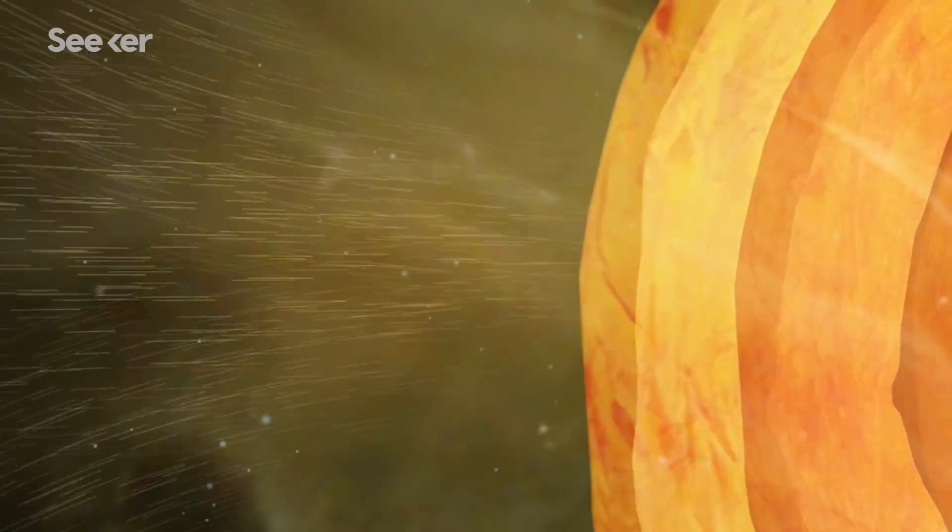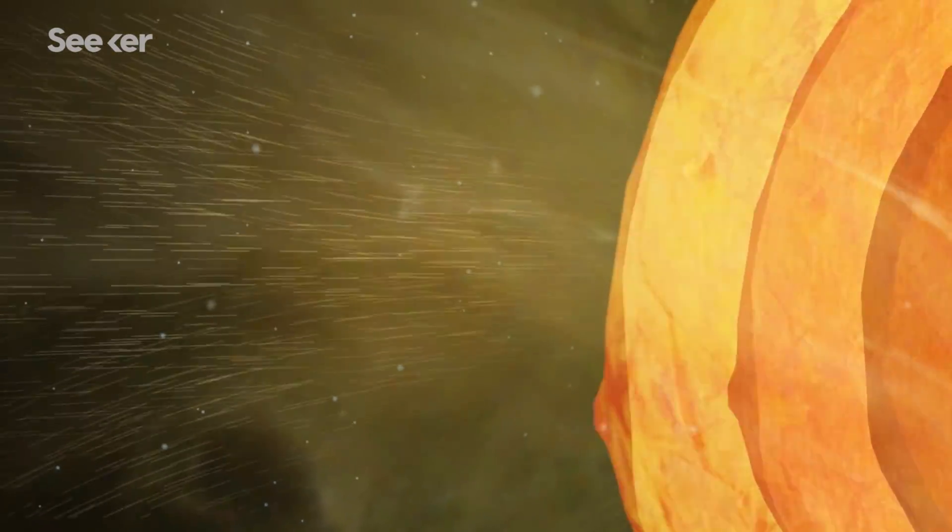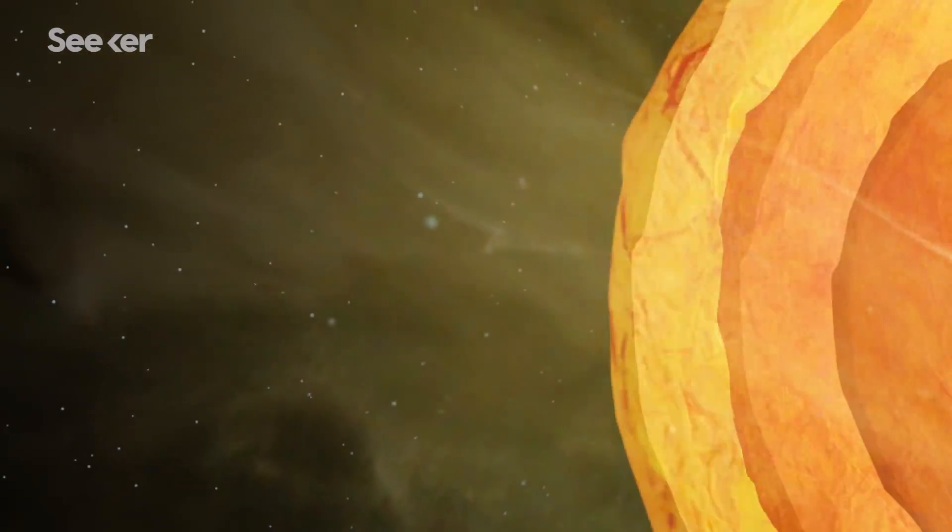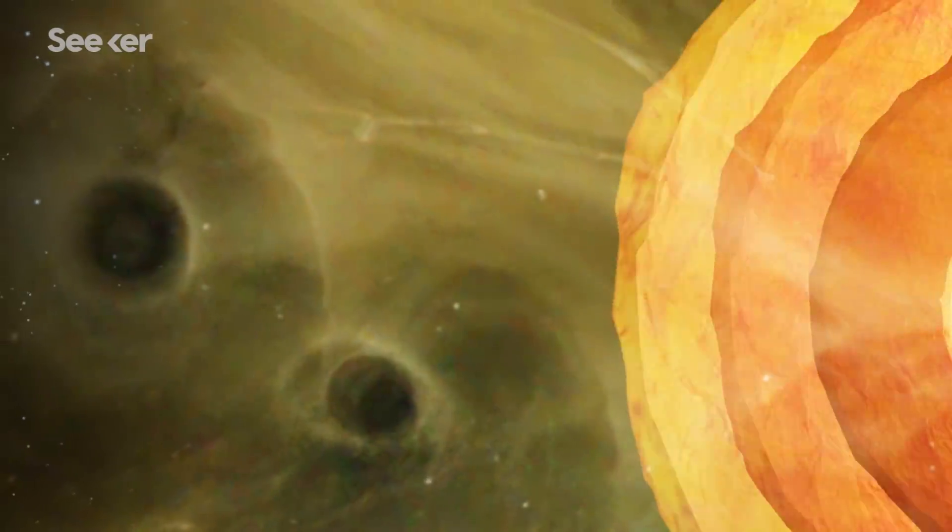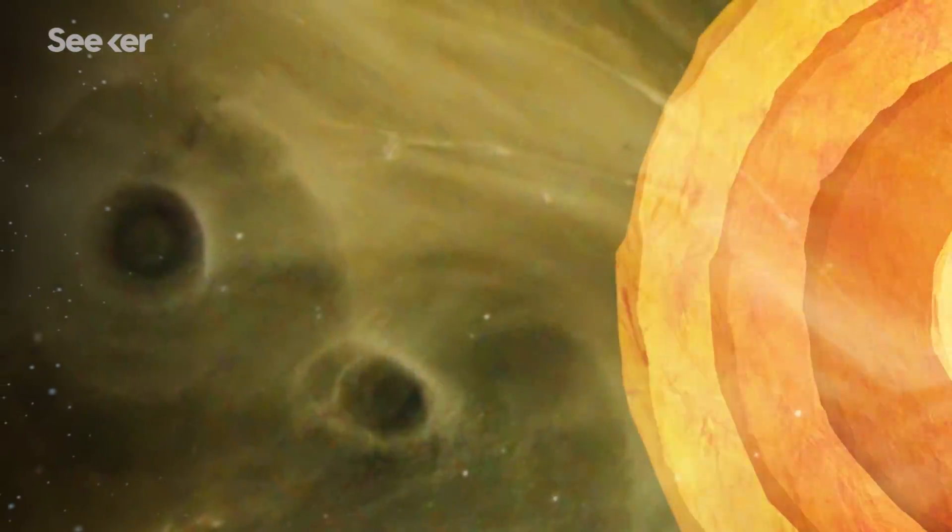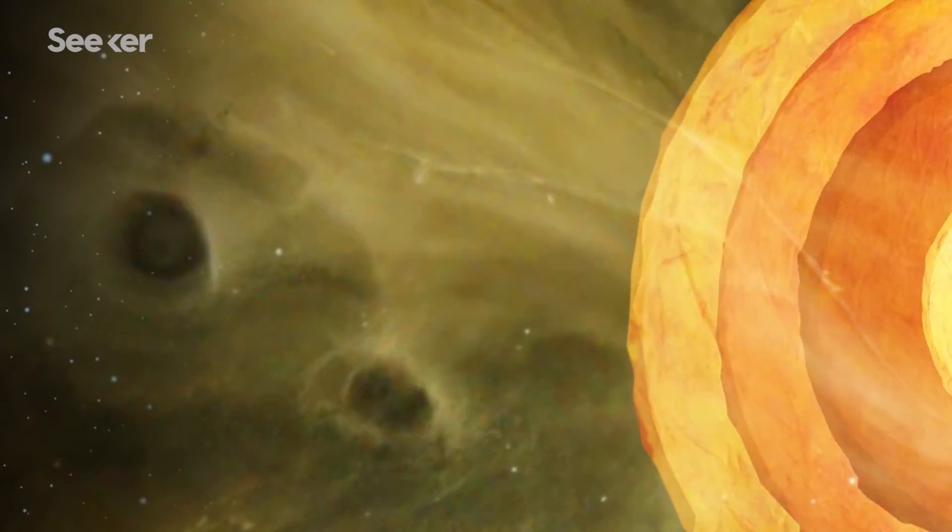These streams carry the Sun's magnetic field far into space at speeds up to 800 kilometers per second. There are theories about the causes of coronal heating and solar wind acceleration, but we haven't been able to land on a definitive answer without actually going to the Sun.